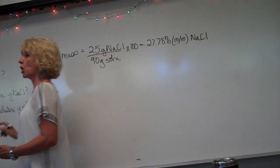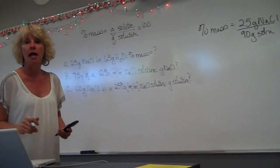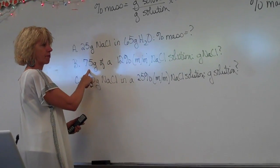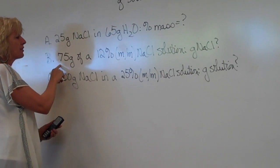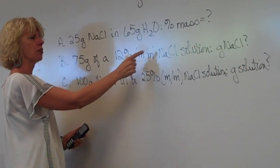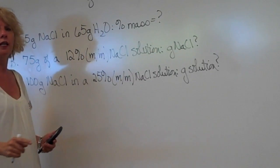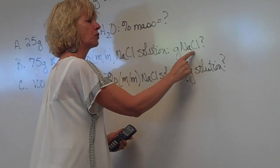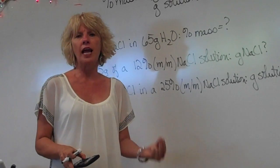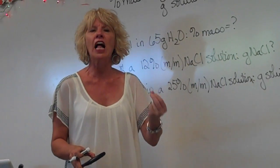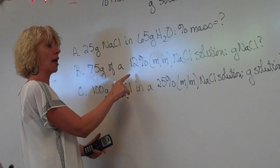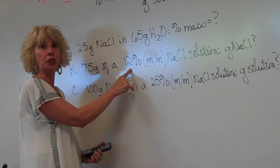That's the first kind of problem for percent by mass. The second kind of problem looks like this: if I have 75 grams of a 12% salt solution, how many grams of salt are in there? In other words, I'm trying to find out how many grams of salt are in 75 grams of a 12% solution.